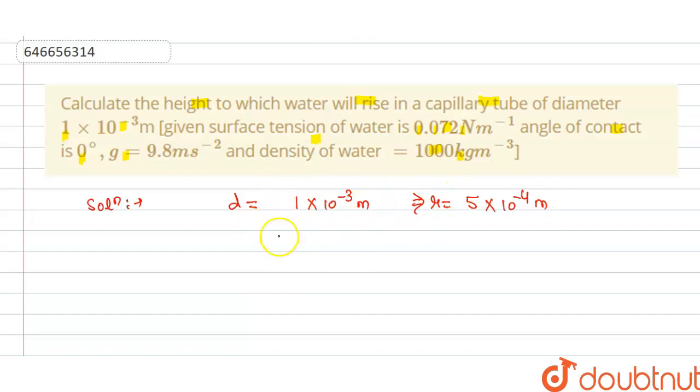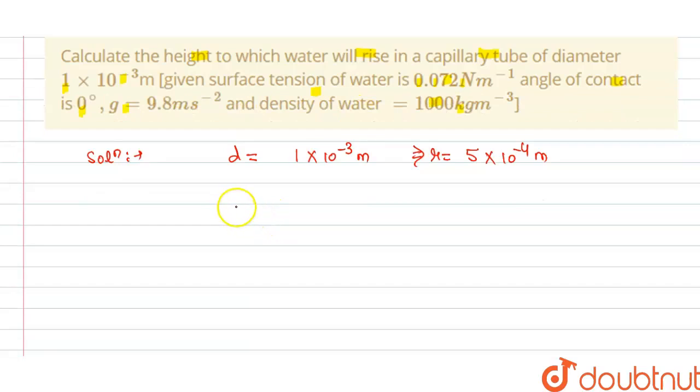As we know that radius is equal to diameter divided by 2, and we have given g is 9.8 m/s². Rho, that is density of water, is 1000 kg/m³, and surface tension T is equal to 0.072 N/m.